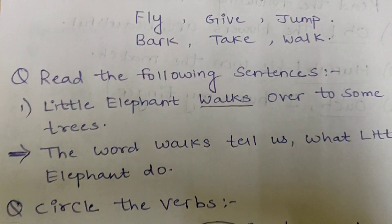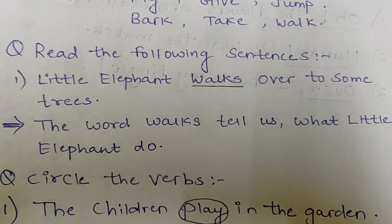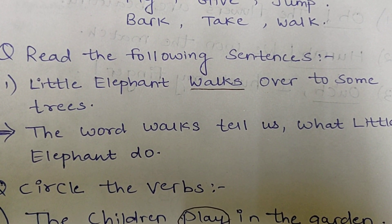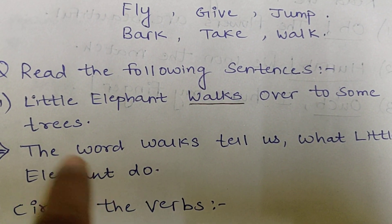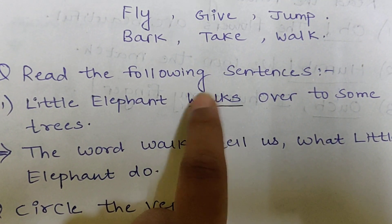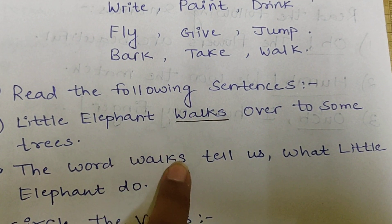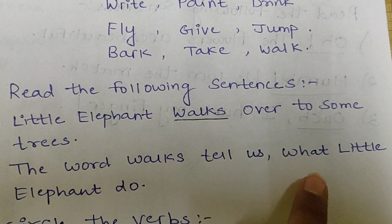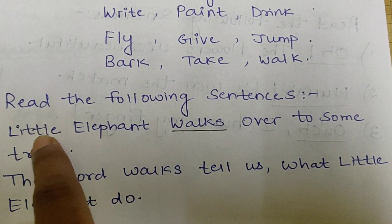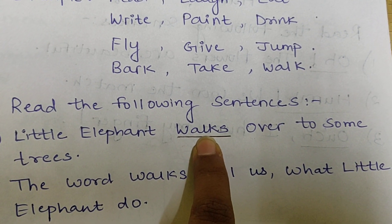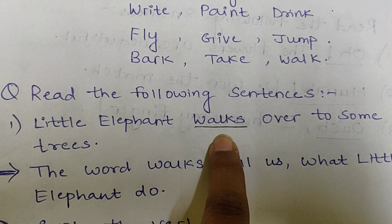Now, read the following sentences. Little elephant walks over to some trees. In this sentence, walks — little elephant क्या कर रहा है? Walk कर रहा है. The word 'walks' tells us what little elephant does. Walk से पता चला कि little elephant क्या कर रहा है, तो walk word क्या है? Action word, doing word — verb बुलेंगे इसको. Yes, verb है यह.